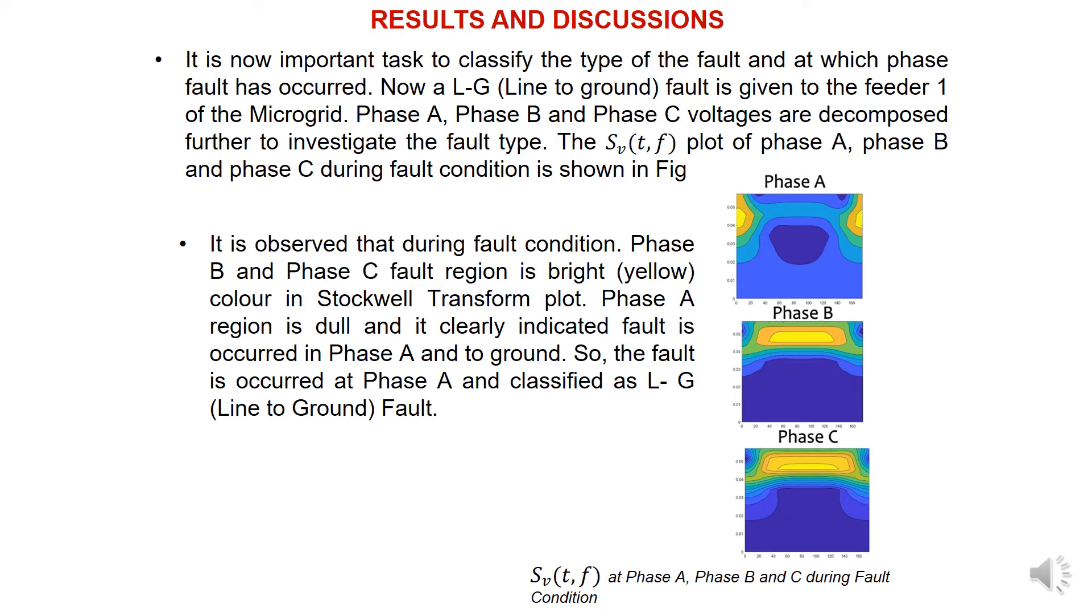Similarly, we have to find which phase fault occurred—whether Phase A, Phase B, or Phase C. It is an important task to classify the type of fault and at which phase fault occurred. Now, an LG fault is given to the feeder. We are taking the same feeder system, same microgrid, and we are giving a single line-to-ground fault here.